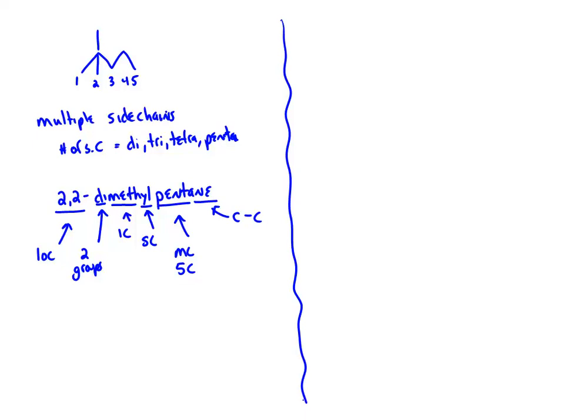We need to give the location of both side chains because they don't have to be on the same carbon. For carbon-carbon single bonds, the ending is always A-N-E. When we get into carbon-carbon double bonds in the next chapter, it'll be an E-N-E ending. The rule is that if it's a side chain, it gets a Y-L ending, and meth tells me there's one carbon. If I put dots on the main chain, there are five carbons, and each side chain is only one carbon long — so that means it's methyl.